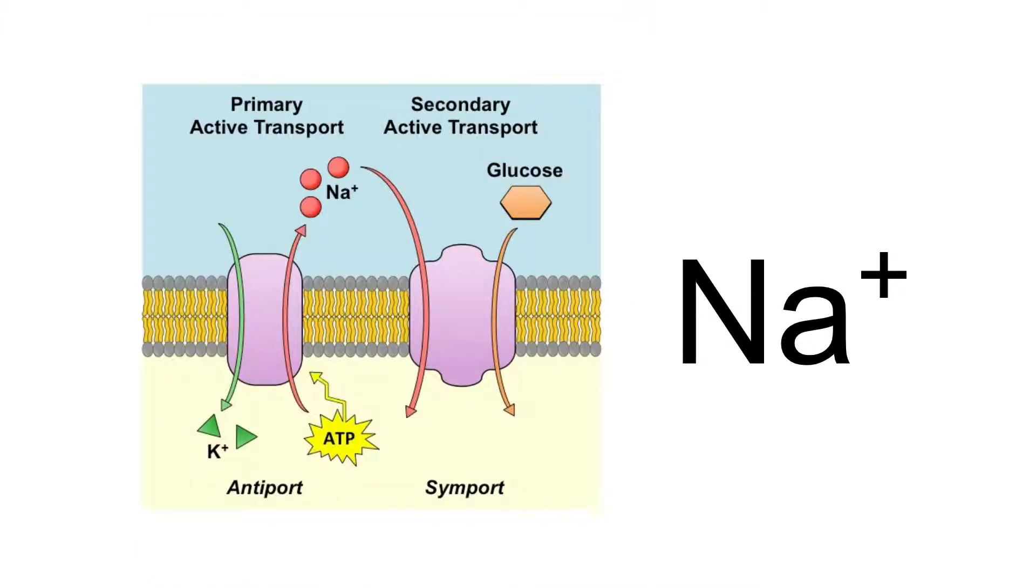The second ion highlighted here is the sodium ion. Now sodium ions are involved in two forms of transport. The first is in the co-transport of glucose. Glucose can only enter a cell if it is moving into that cell alongside one sodium ion.